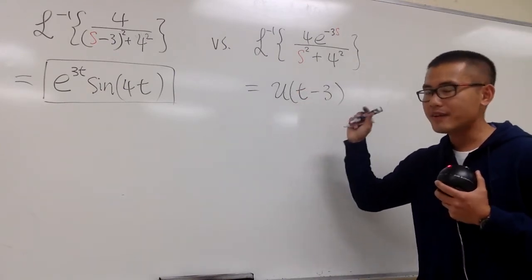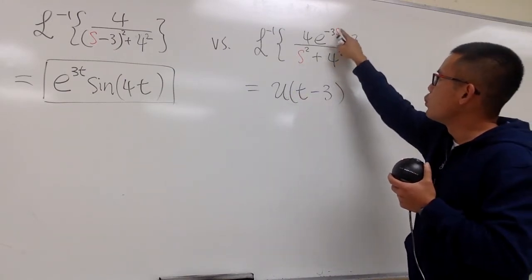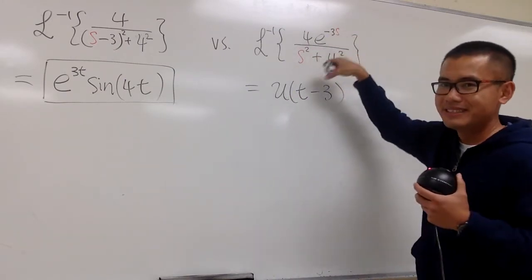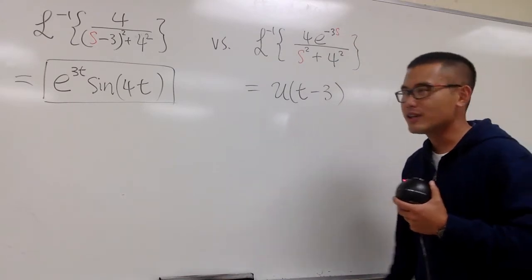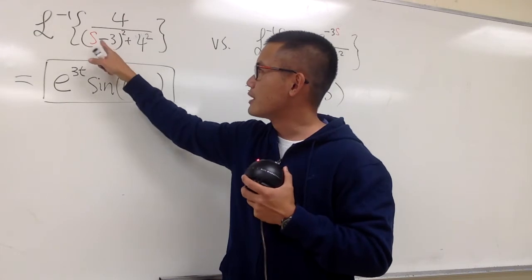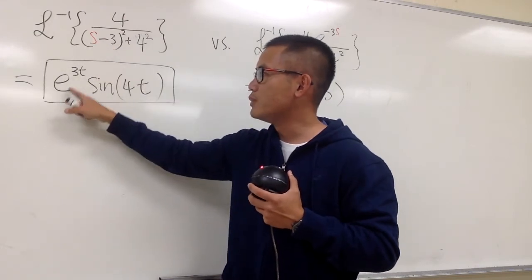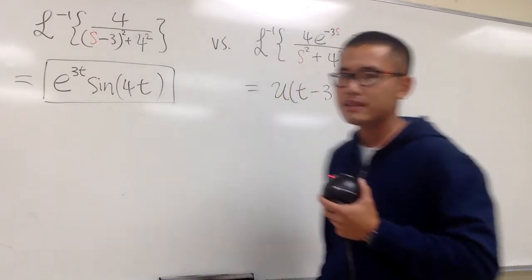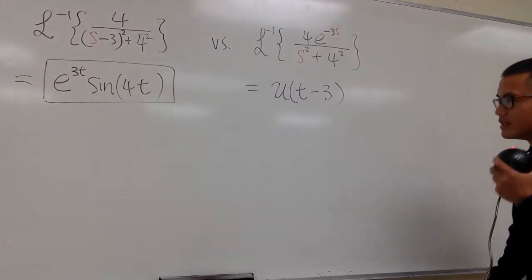You always have that unit step function whenever you have e to the whatever s in this part, right? So unlike earlier, whenever you are subtracting or adding something directly to the word s, you always have e to the whatever t in the t world, like that. So notice the difference.